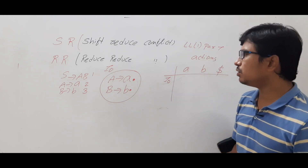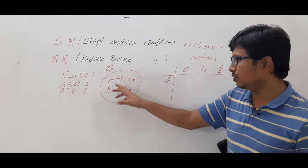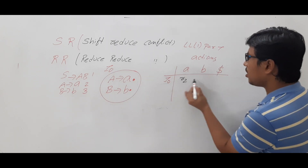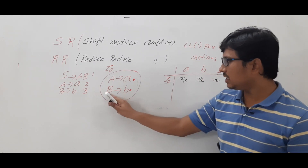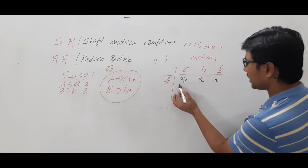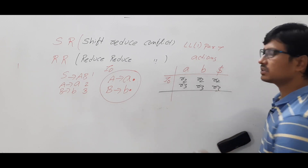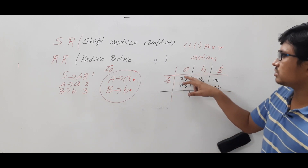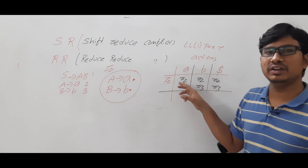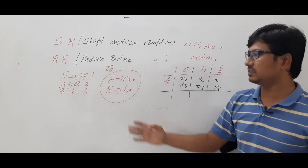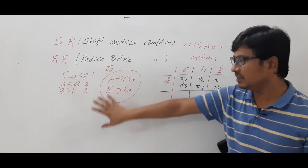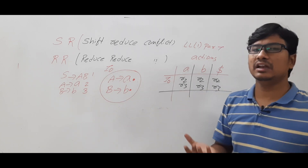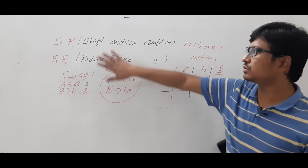Since A → a· is a reduce move (r2), we write r2 under all terminals in the action part. Similarly, B → b· is also a reduce move (r3), so we write r3 under all terminals. This results in multiple entries — r2 and r3 — in the same cells, which is a Reduce-Reduce conflict. If this scenario occurs, the given grammar cannot be parsed using an LR0 parser.